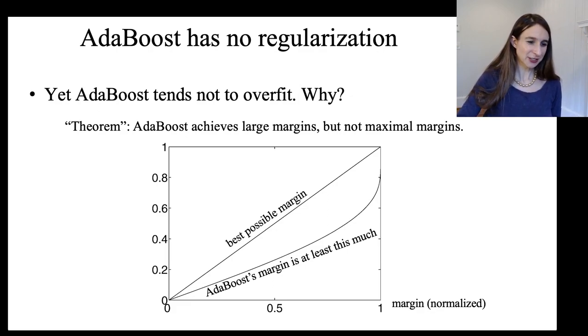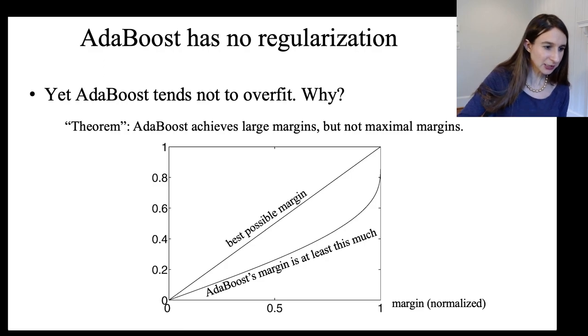So if the margin is, if the best possible margin is point five, then AdaBoost's margin is at least somewhere around point two there.